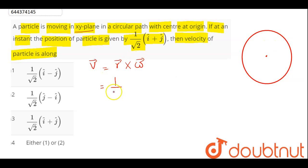Therefore, r vector here is given as 1 by root 2, we have i cap plus j cap cross omega vector can be either plus k cap or minus k cap.